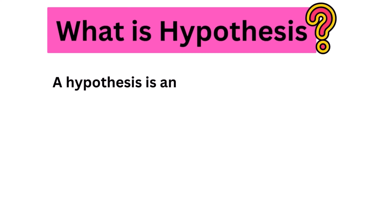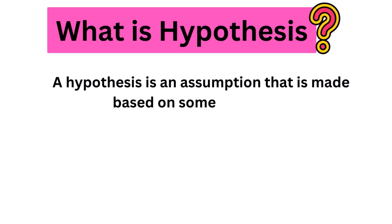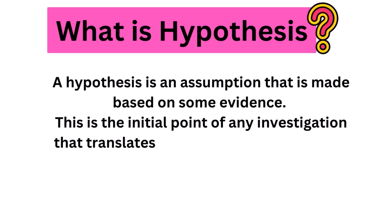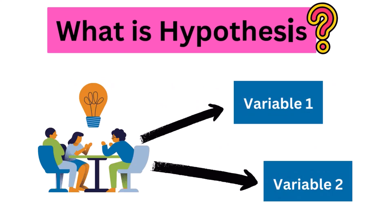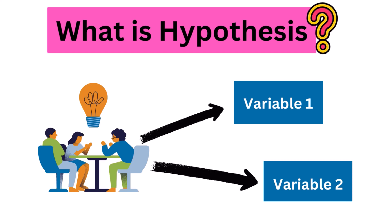First, we need to understand: what is a hypothesis? A hypothesis is an assumption that is made based on some evidence. This is the initial point of any investigation that translates the research questions into predictions. It includes components like variables, population, and the relation between the variables. A research hypothesis is a hypothesis that is used to test the relationship between two or more variables.